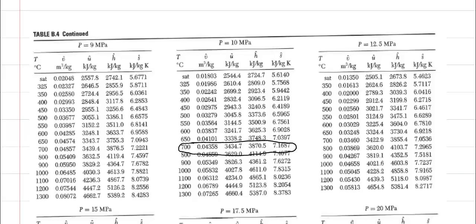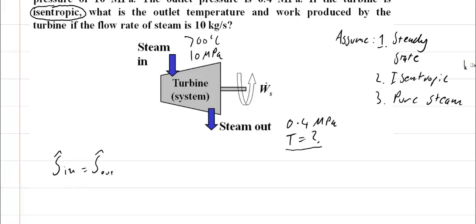I get an inlet entropy of this as well. I'm going to use this information a little bit later on. My entropy in is equal to 7.17 kilojoules per kilogram, and my enthalpy in is equal to 3870.5 kilojoules per kilogram. I'm going to need this to figure out the work produced later on.